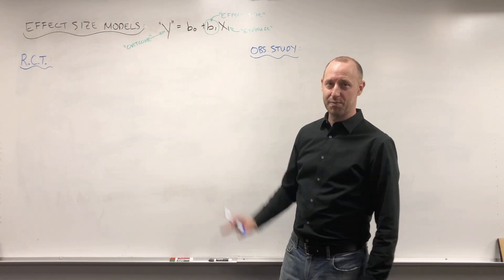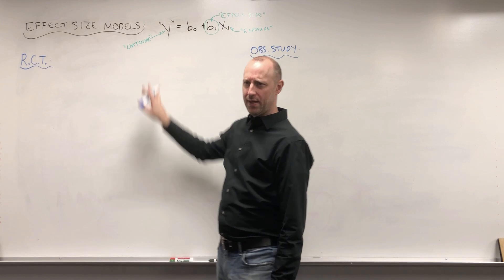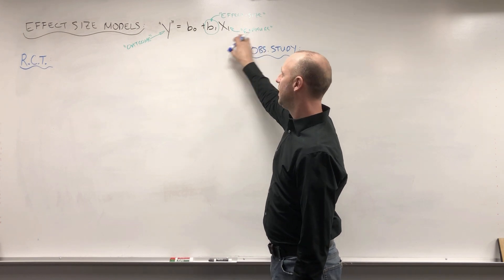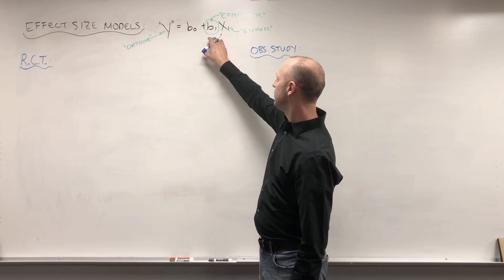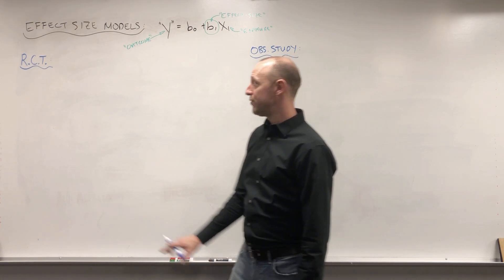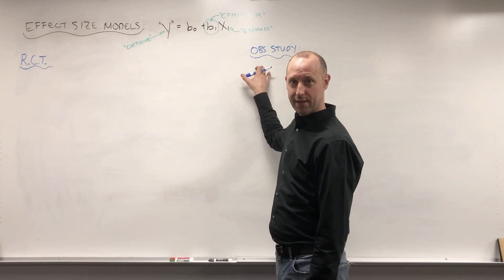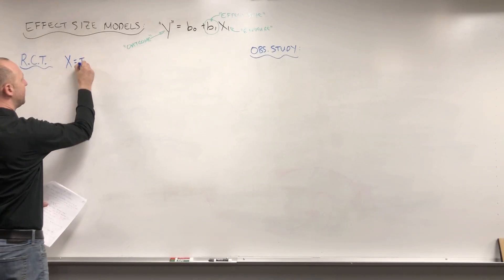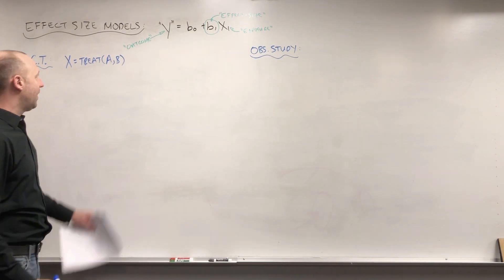We've introduced the idea of an effect size model. We're looking generically at the effect that some exposure has on some outcome — but those terms are in quotes. We're going to be looking at whether someone is in protocol A or protocol B, and what effect A versus B has on some outcome. This coefficient B1 captures what effect X1 is having on the outcome.